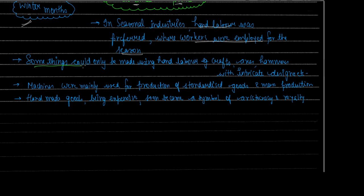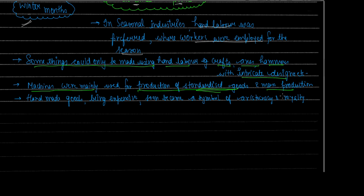There were several reasons machines were not widely used. Some things could only be made using hand labor — for example, crafts, axes, and hammers with intricate designs. Handmade goods always have very high value; even today, handmade decoration pieces are considered rare and beautiful. Such intricate crafts could only be made by hand labor. Machines were mainly used for production of standardized goods and mass production — like uniforms or books — where large bulk quantities were needed.